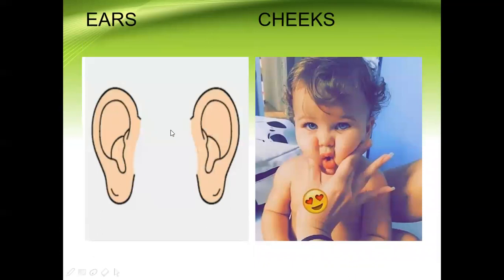And this is the chin. These are the ears — how many ears do we have? Two ears. And these are the cheeks. How many cheeks do we have? Two cheeks.